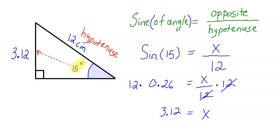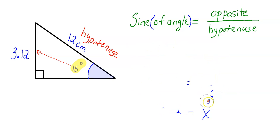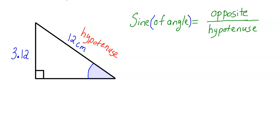Now the goal is to find this side length. We're going to kind of start over because we have one more side length to find. Now, there's more than one way to do this — you can use other trig ratios like cosine and tangent. You can even use the Pythagorean theorem, a² + b² = c². But the goal of this video is to use the sine ratio the whole time. So keep in mind there's more than one way to do this.